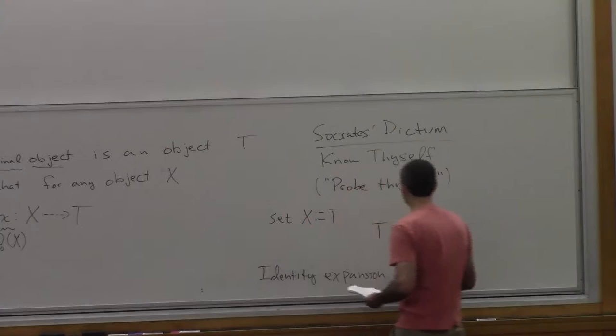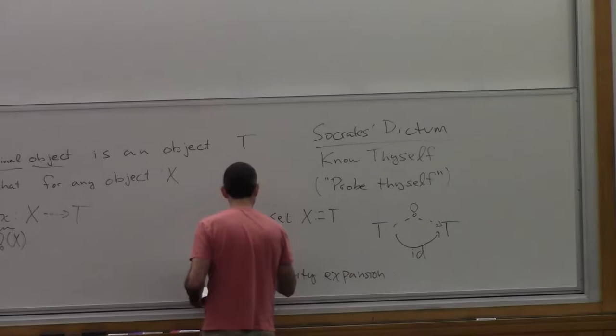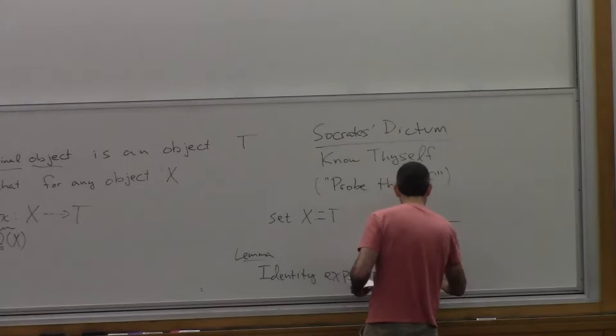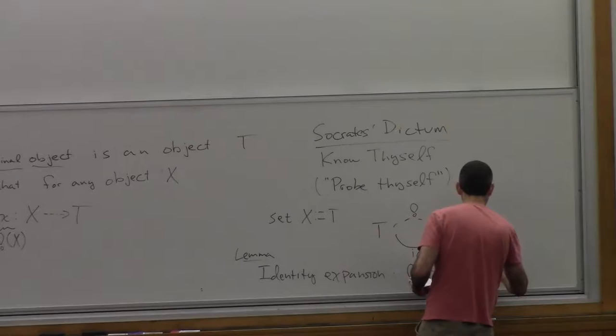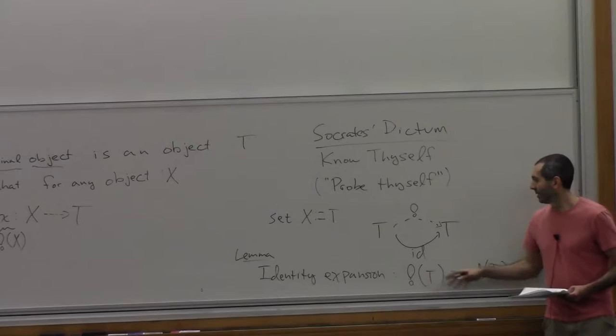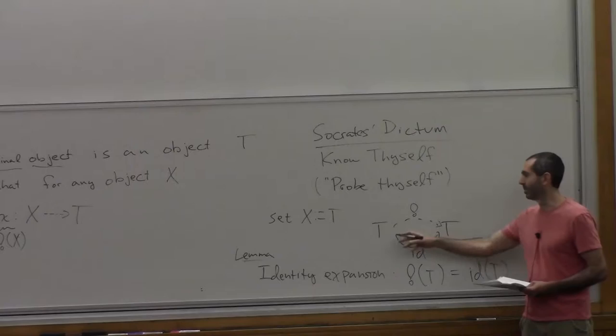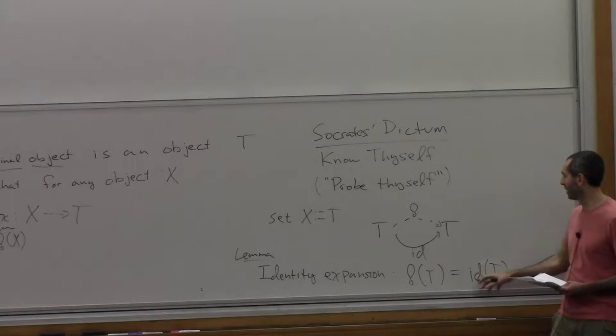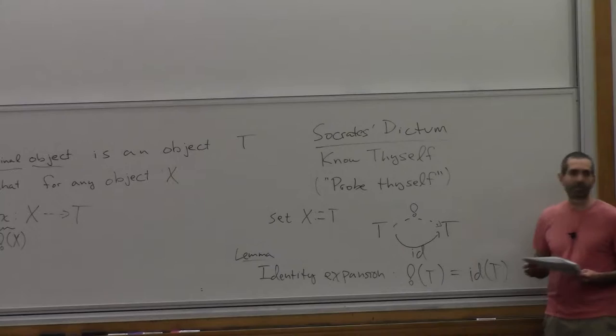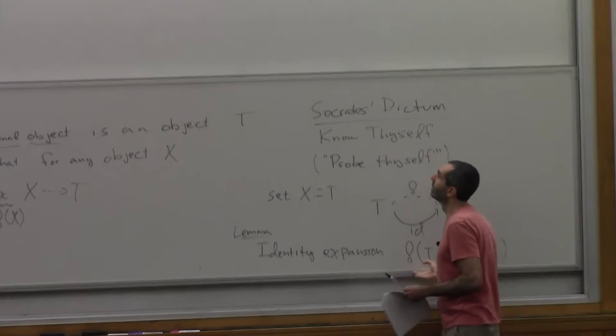In this case for terminal objects, this is a lemma — because we just proved it — that the bang of a terminal object T is equal to the identity map on that object. The notation is a little ambiguous because the bang doesn't tell you which terminal object, but the domain and co-domain are both T, so we can infer it. This is what we learned by probing a terminal object with itself. Thank you, Socrates.